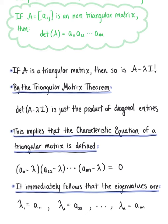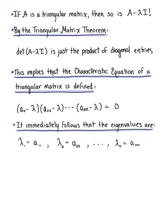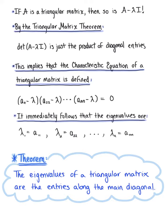We can now summarize our observations with the following theorem. The eigenvalues of a triangular matrix are the entries along the main diagonal.